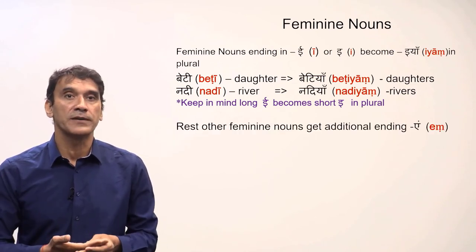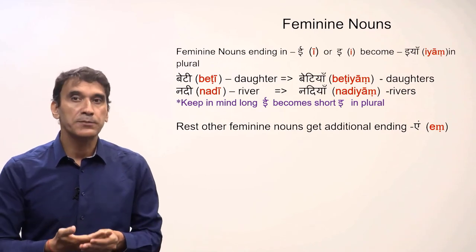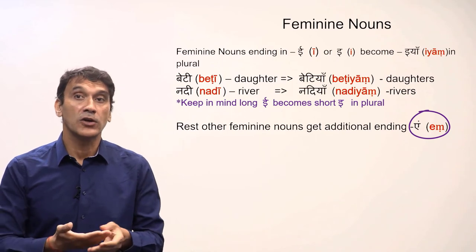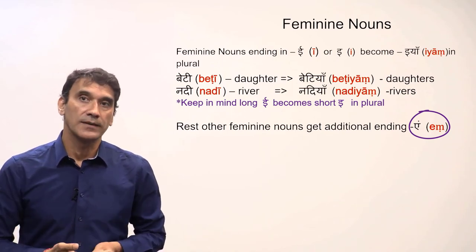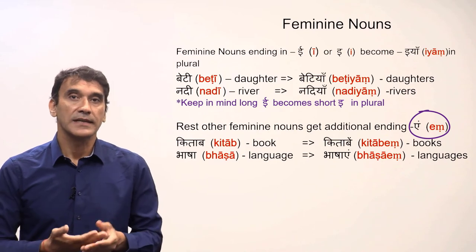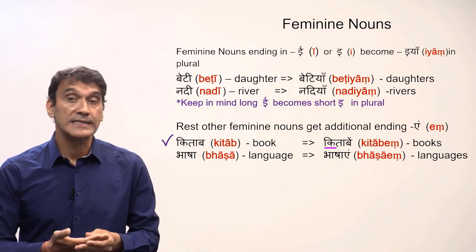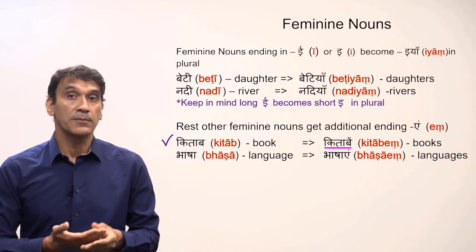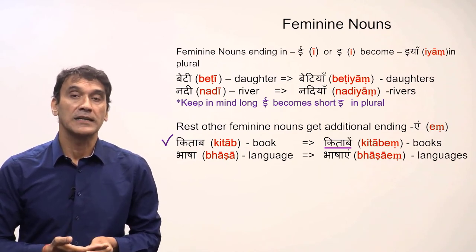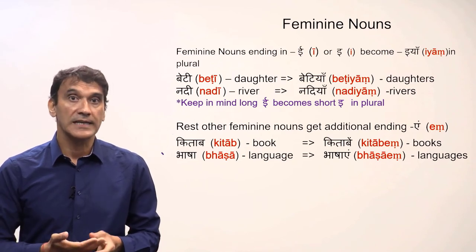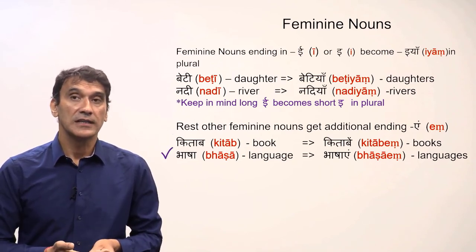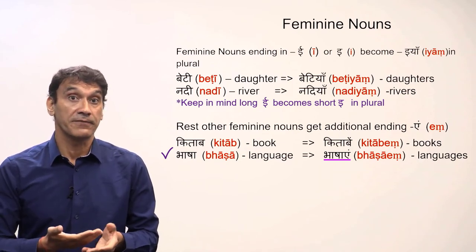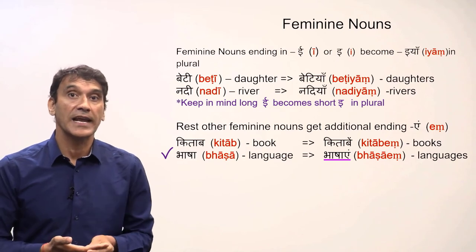The type two feminine nouns — those that do not end in 'ee' — get an additional ending 'en' in plural. For example, 'kitaab' meaning 'book' does not end in 'ee', so the plural form gets additional 'en' to make it 'kitaaben' meaning books. Another example: 'bhaasha' meaning 'language' is feminine and does not end in 'ee', so it gets the additional 'en' to make 'bhaashaen' meaning languages.